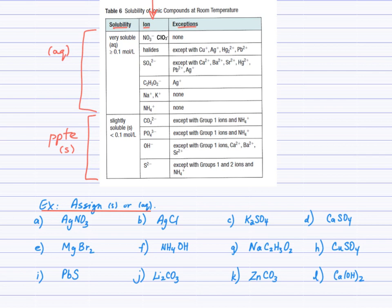For part A, silver nitrate AgNO3: we look for the negative ion, which is nitrate. The nitrate ion is in the top half of the table where we see aqueous — compounds containing a nitrate ion are usually soluble. There are no exceptions, therefore we put AQ beside silver nitrate. Silver nitrate is very soluble in water.